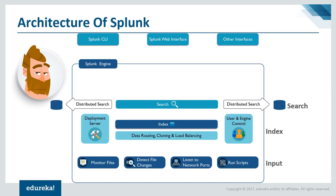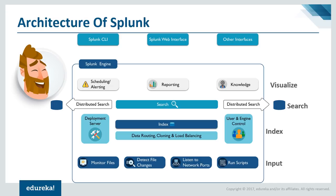Now that the user has access to the search head, they can search through the indexed data. The end user has the ability to create knowledge objects — such as tags, event types, or field aliases. They can also create reports and schedule alerts. Splunk is commonly used for monitoring, whether it be network monitoring or enterprise monitoring. All monitoring, search, and reporting happens on top of the search head. This was the complete architecture of Splunk and how each component works.